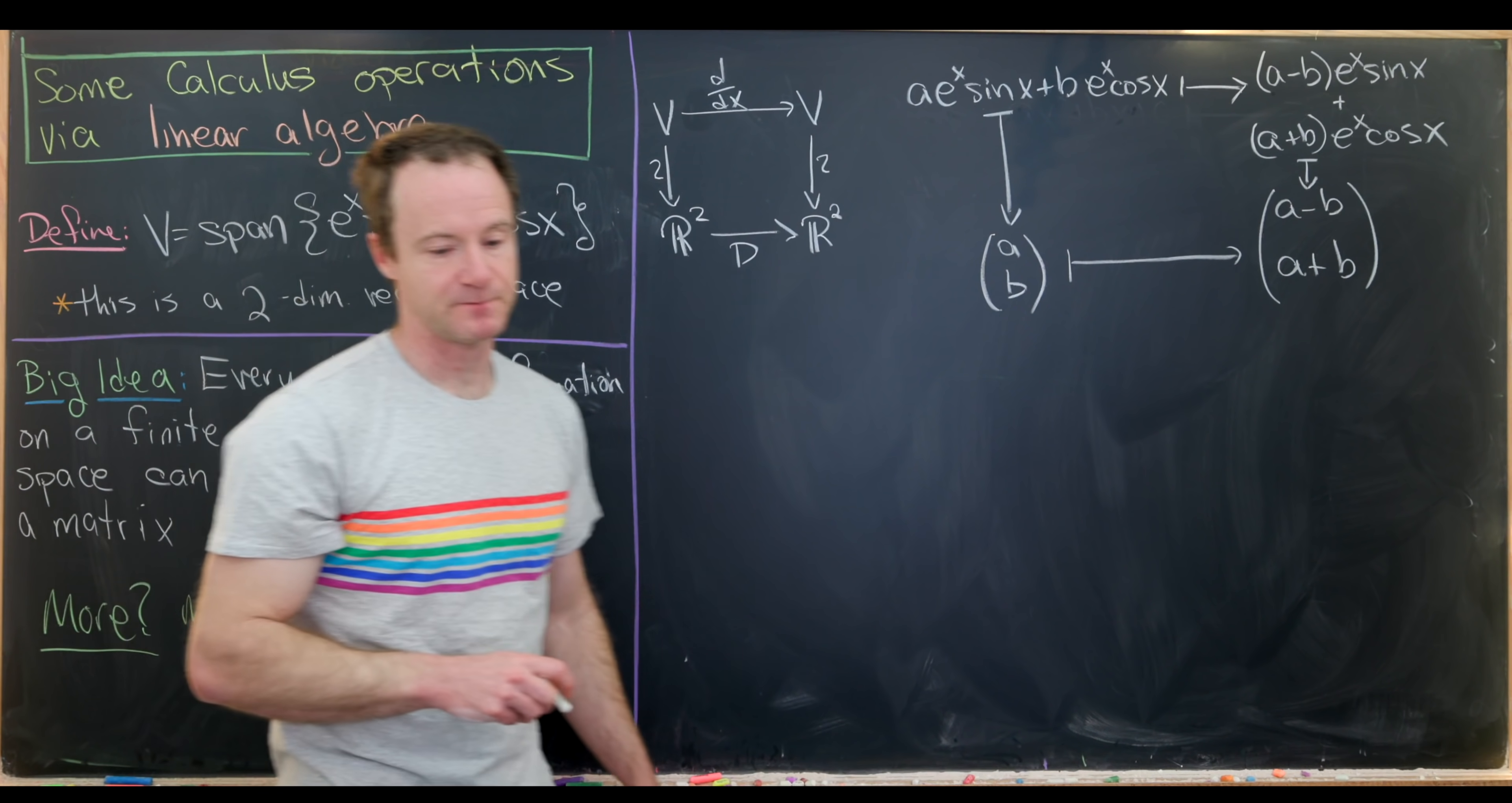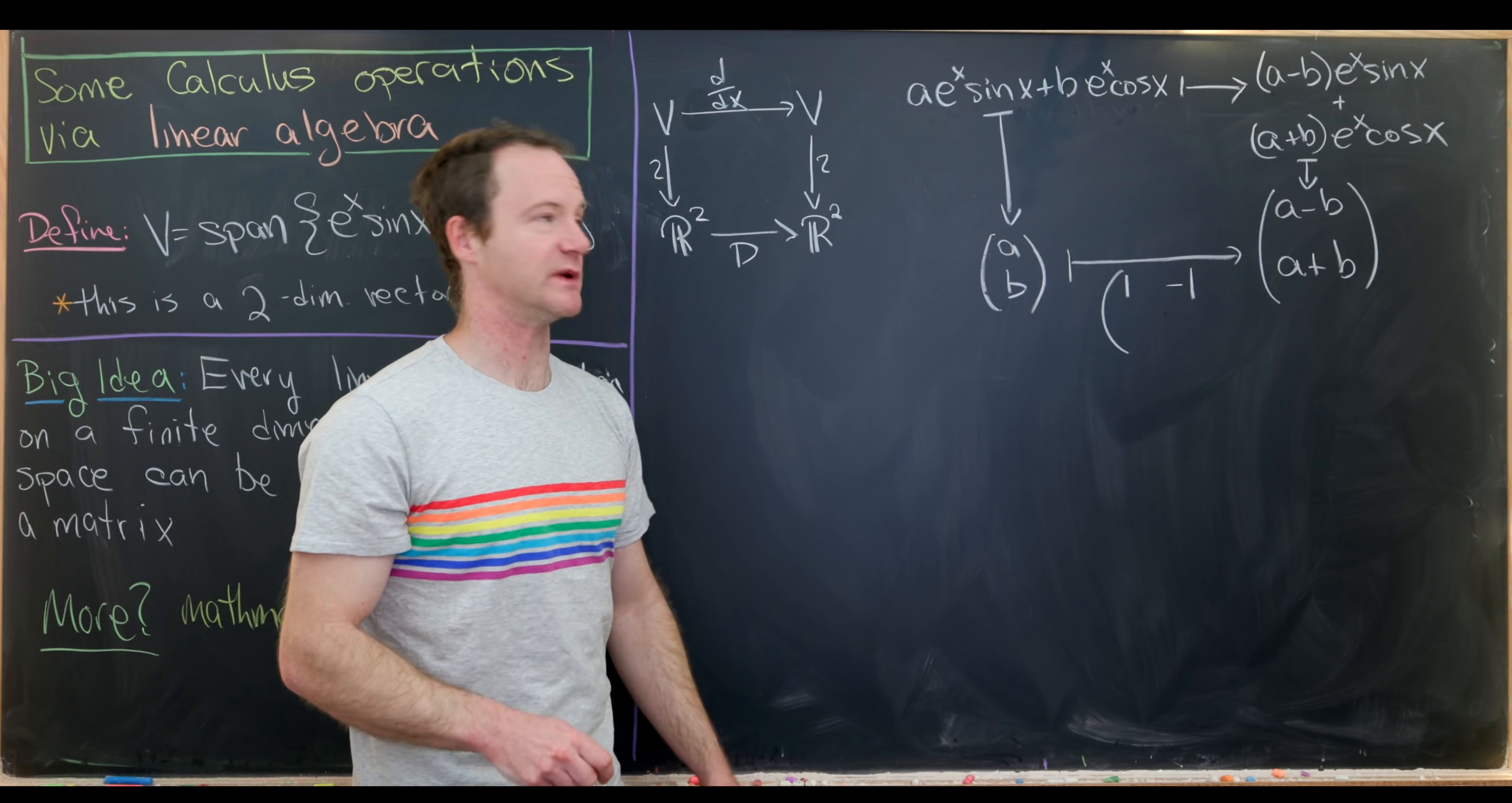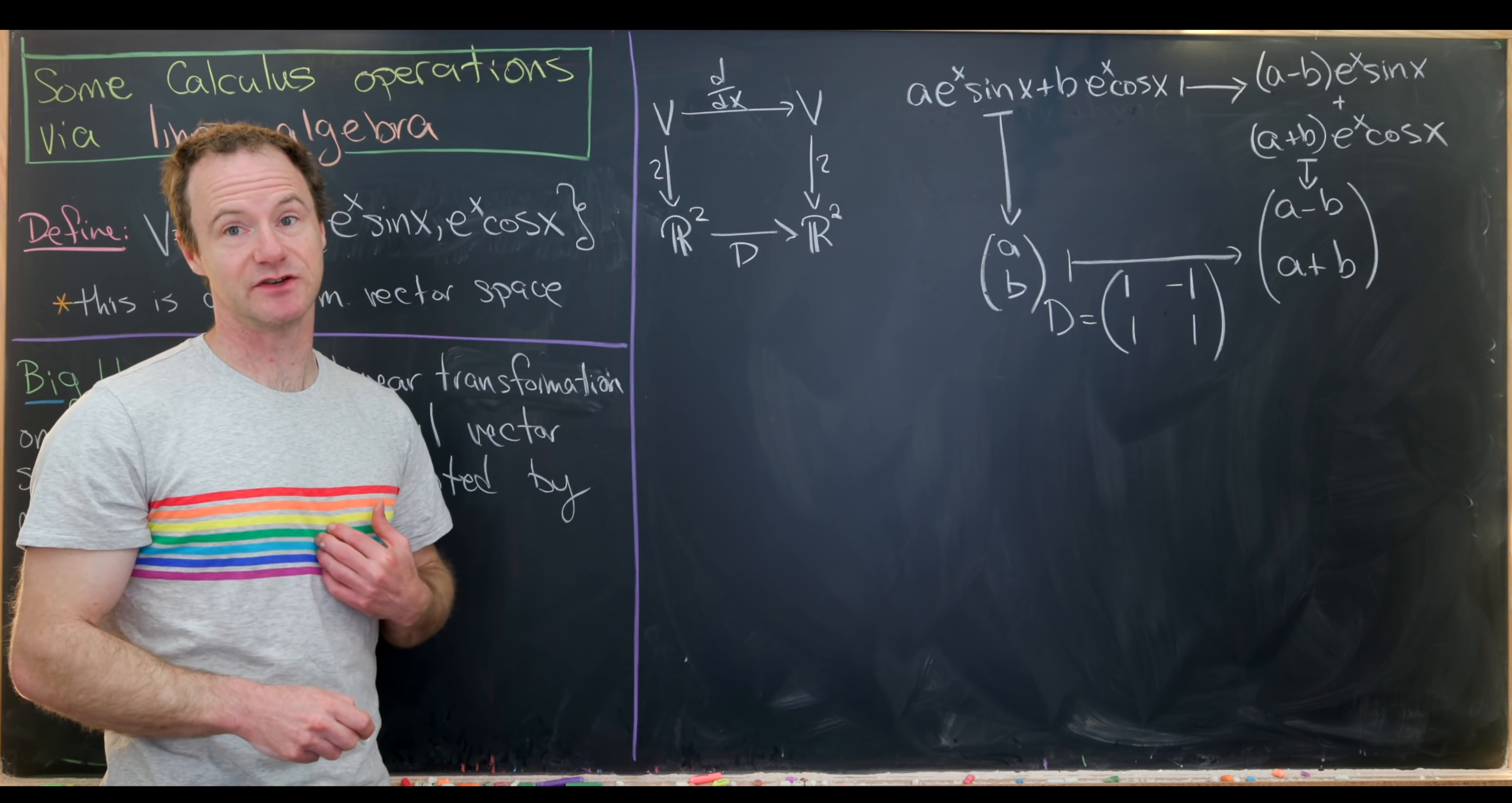Now we just have to figure out what matrix takes a, b to a minus b, a plus b. That's actually not super hard to write down. Notice the first row needs to be 1, minus 1. And that's because when we swivel this first row into this vector, we get 1 times a minus 1 times b, add them up, and we get a minus b. Then we're going to furthermore, this second row needs to be 1, 1. And then maybe we'll call this D.